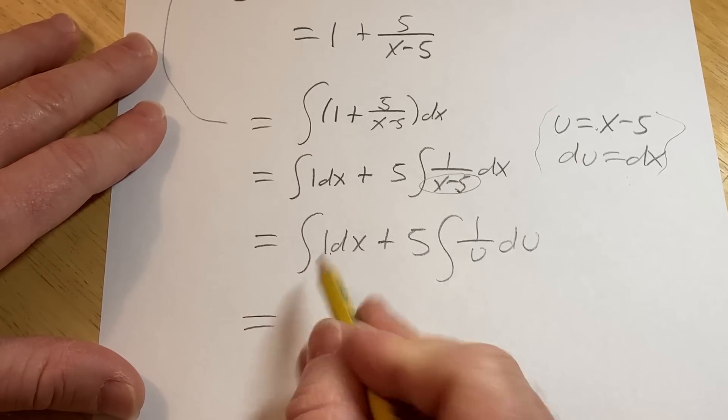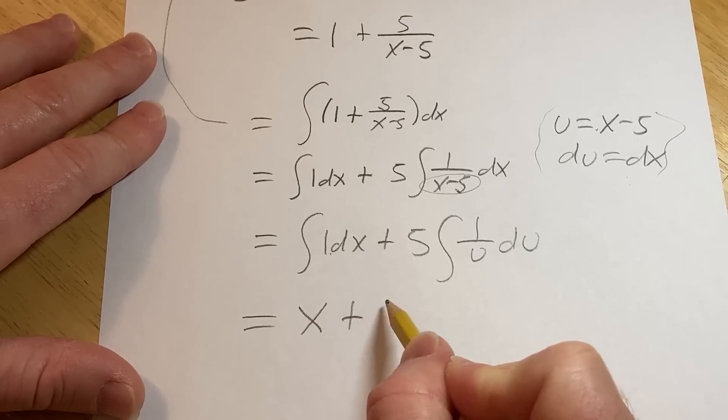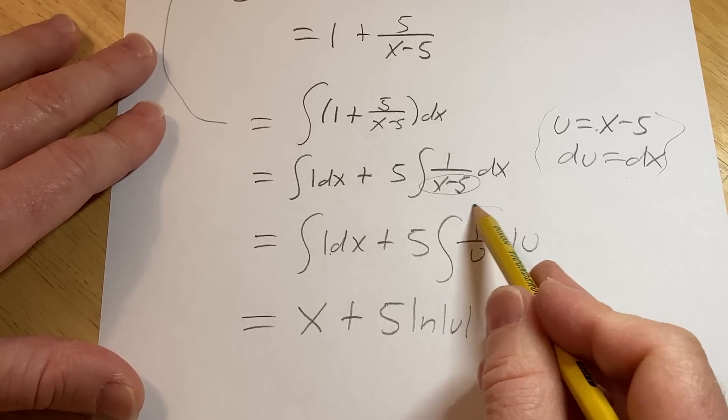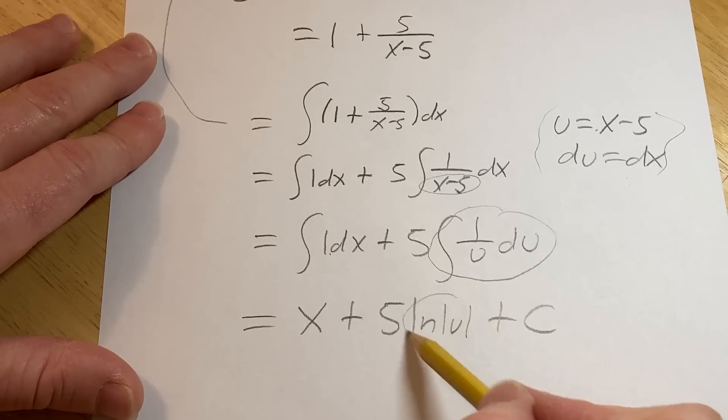Let's go ahead and integrate. This is going to give us x plus 5 natural log absolute value of u plus c. That's a formula, right? This is going to give you this.